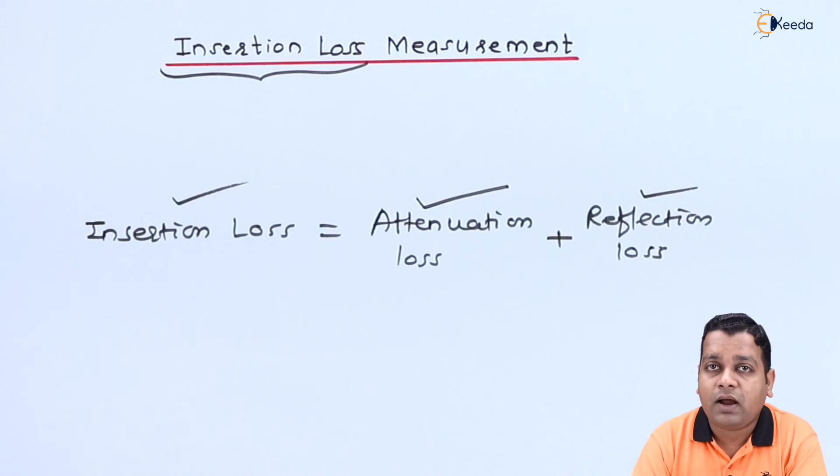By the next lecture, we shall address another measurement for the parameter called the dielectric constant. The relative dielectric constant can be denoted epsilon r. Let us see its measurement in the next lecture in the same chapter called Microwave Measurement.